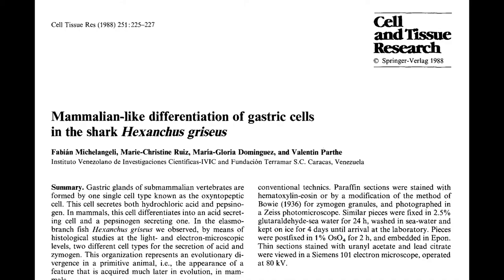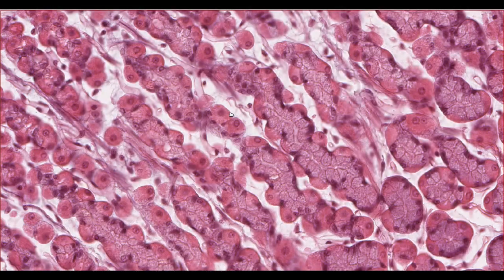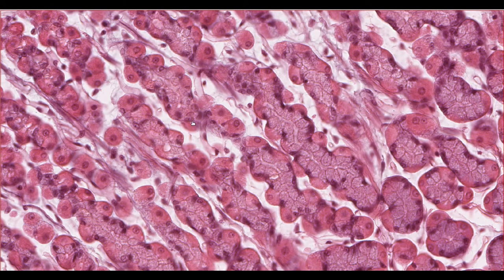However, the distribution of the cells in this species is different. Whereas in the mammal you can see that glands are made up of both kinds of cell, in the six-gill shark, glands are lined by only one type of cell, but there are two different kinds of gland. This represents an example of convergent evolution, where a similar trait has evolved in two distinct lineages of animals independently of one another, but to fulfill the same purpose.